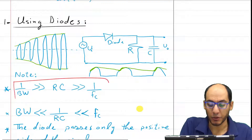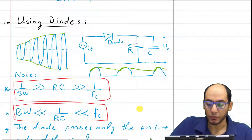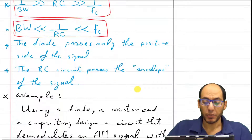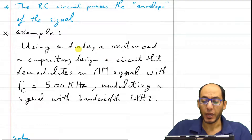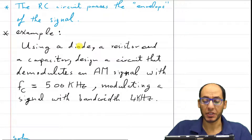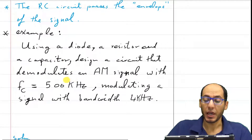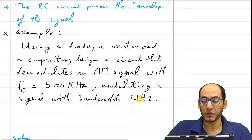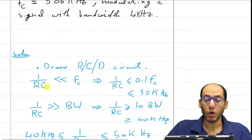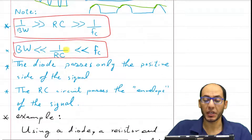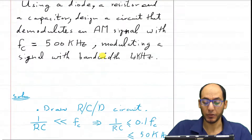Let's take an example. We're given a diode and we would like to find the values of the resistor and capacitor. Assuming the diode is ideal, we need to find R and C such that the circuit demodulates an amplitude modulated signal with a carrier frequency of 500 kHz and a bandwidth of 4 kHz. We need 1/RC to be much less than fc.